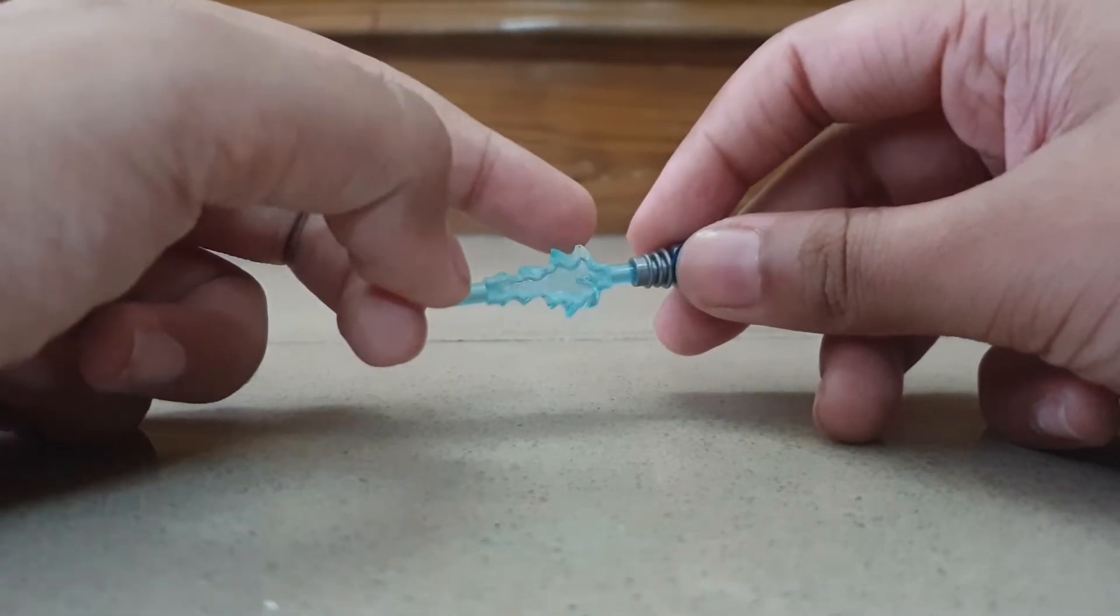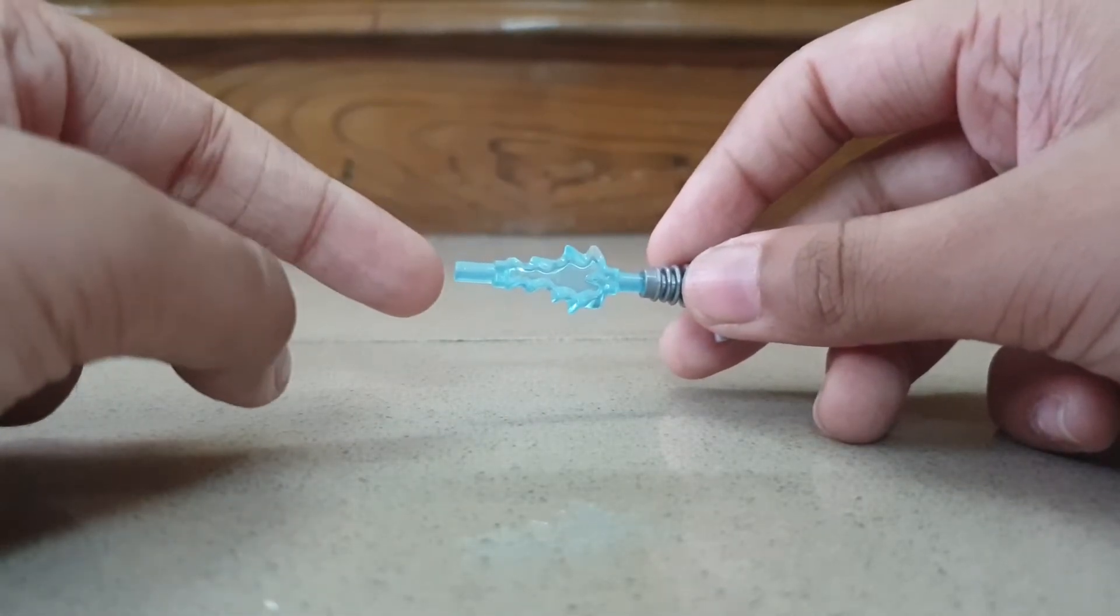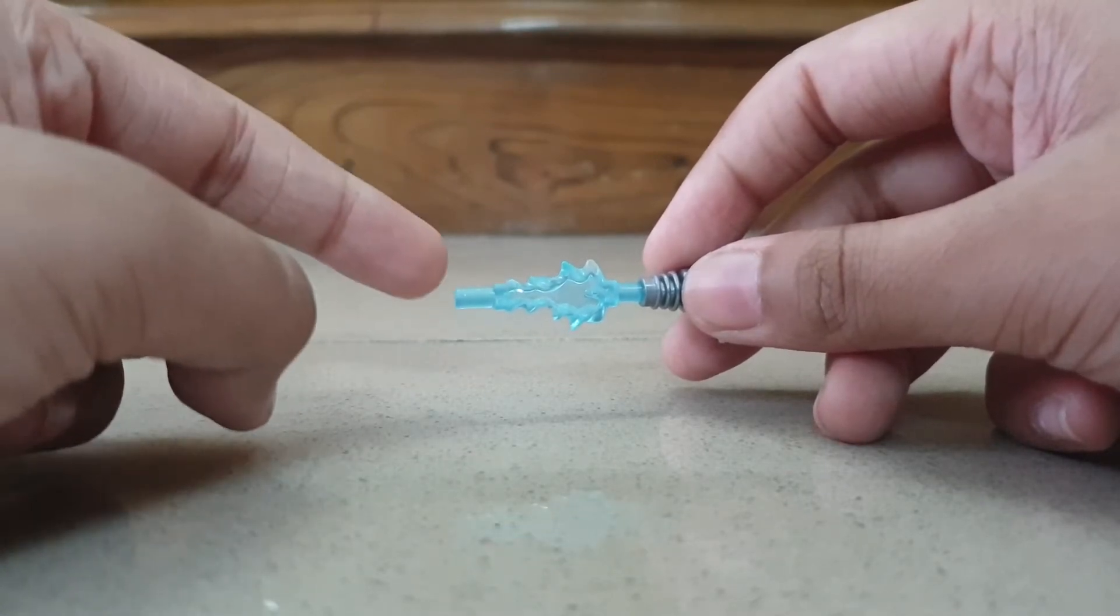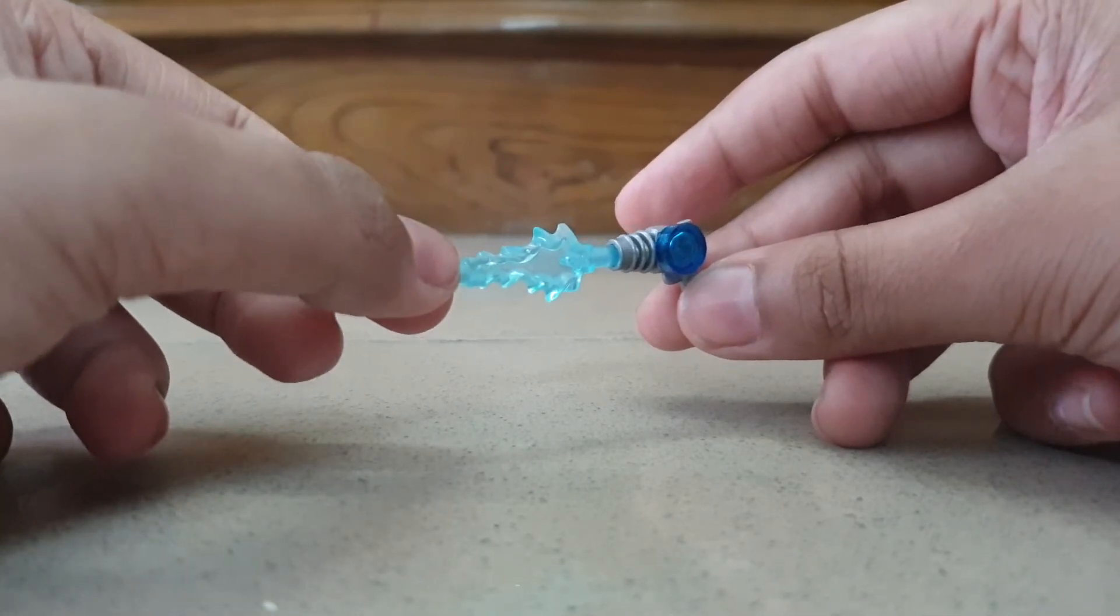This is Iron Man's repulsor from the Sanctum Sanctorum set, but I got this from the Batman Bat-Sub set which had Aquaman and Ocean Master in it, and also Batman. This is how you build Agent K's blaster.